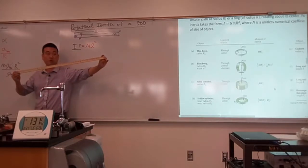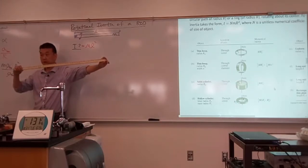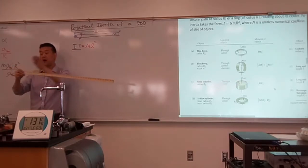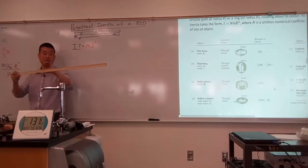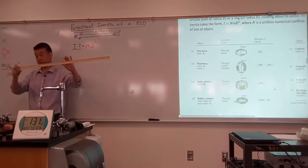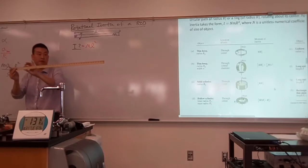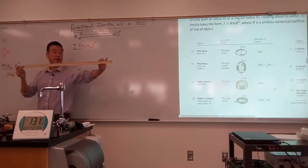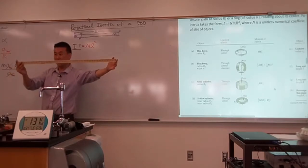Is all of the ruler at this one point? No. Some of the ruler is actually at R equals zero, some of the ruler is at R equals L over two. The ruler is spread out over the entire length of the ruler.